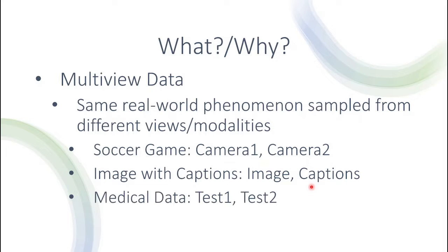Another example is for medical data. A patient can have several tests and each test represents a different view of that patient — it's the same phenomenon, which in this case is a patient or maybe a disease. The reason we need this multi-view data is: suppose you're a doctor and you want to make some decision regarding your patient. Naturally it would be better to make a decision based on several tests, and you would rather make the decision on more data.